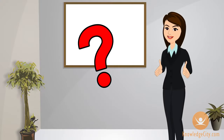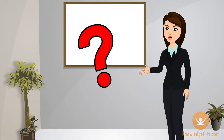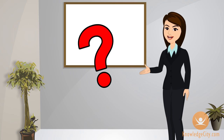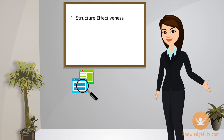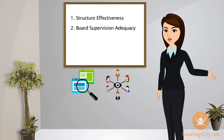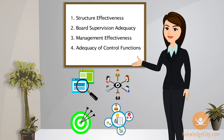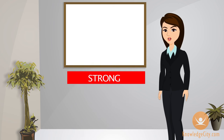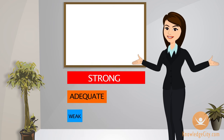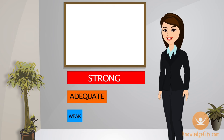How is corporate governance assessed? Assessing corporate governance can be classified into four general topic areas: structure effectiveness, board supervision adequacy, management effectiveness, and adequacy of control functions. A three-tiered rating system of strong, adequate, or weak is commonly used to summarize the results of an assessment.